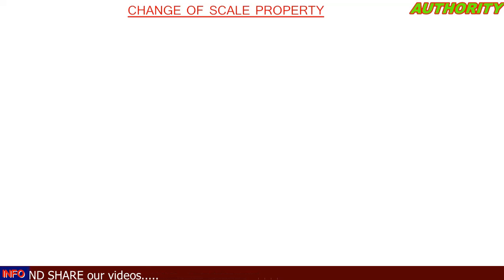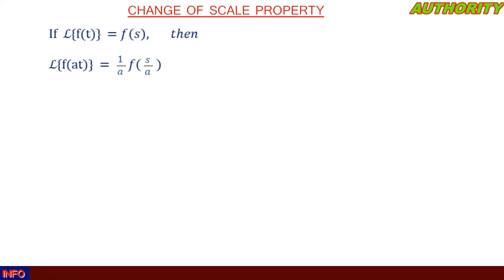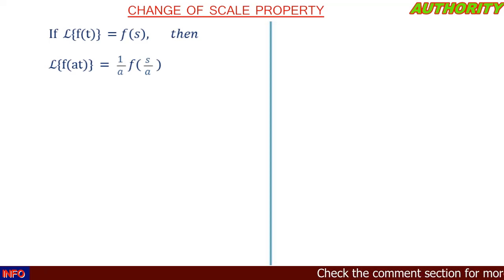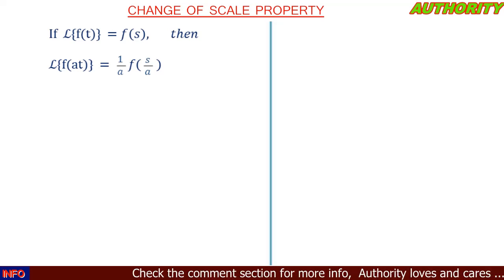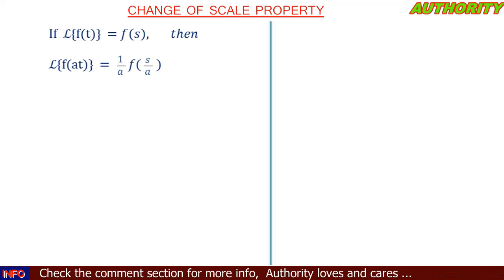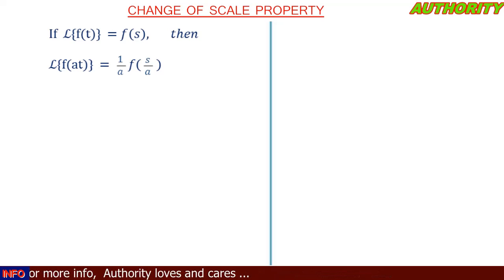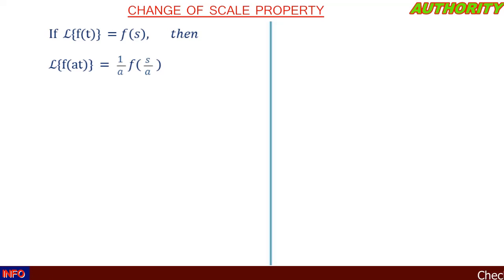Please go through the different properties you have treated for easy and better understanding. Now, what does this property state? When you have a function f(t) and you take the Laplace transform, it gives you F(s). Then the Laplace transform of f(at) is going to give you one over a times F(s/a). This is called the Change of Scale Property.